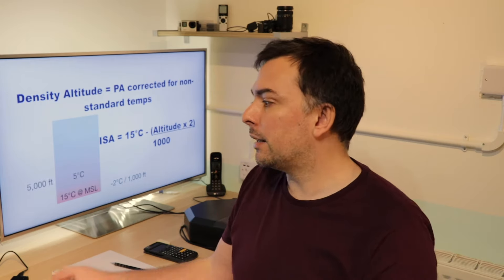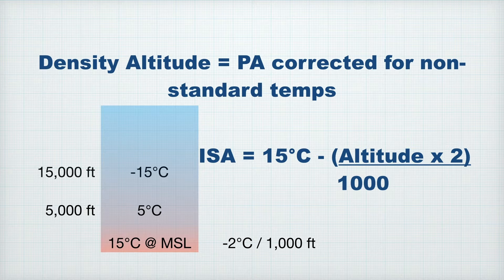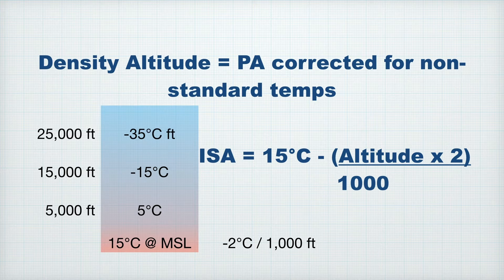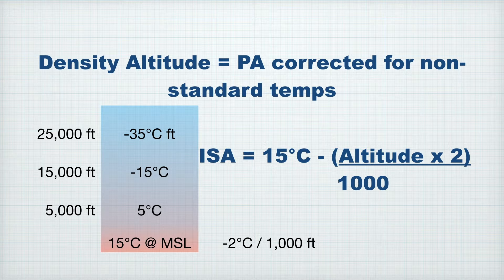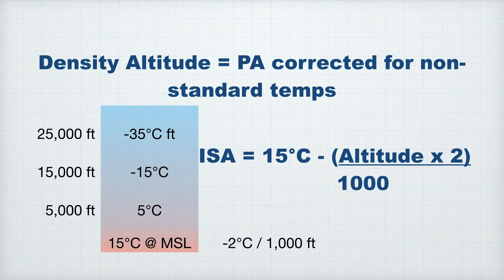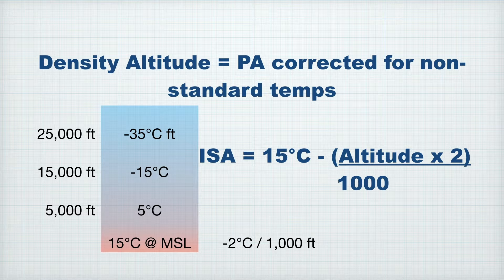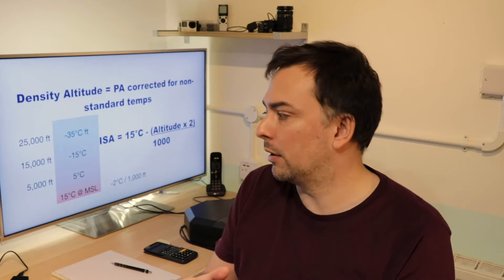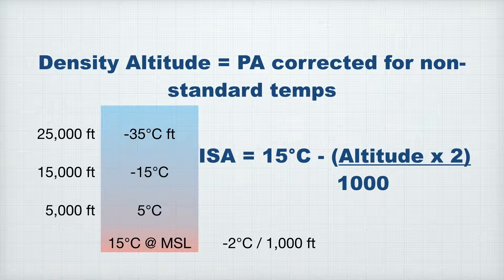This assumes a temperature of 15 degrees at sea level. At 5000 feet our temperature would be 5. At 15,000 feet our temperature would be minus 15. At 25,000 feet our temperature would be minus 35. And you can work this out for any altitude using the formula shown here on the right. Note that above 36,000 feet, the temperature actually remains constant at minus 57 degrees. We're not going to get into how or why, that's a meteorology question. Just know that it does.